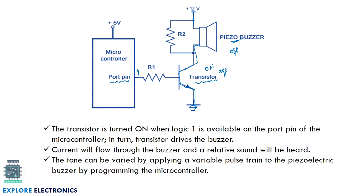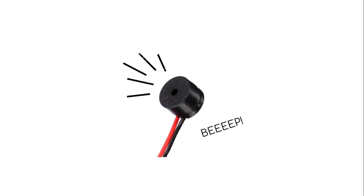When the microcontroller port has value 1, the transistor gets the necessary VBE voltage and turns on. When it is 0, VBE will be 0 and the transistor is off.